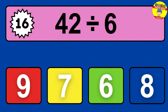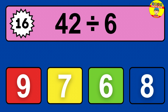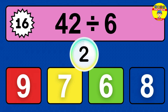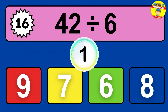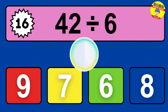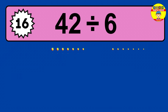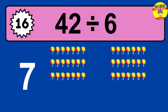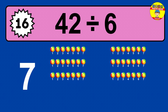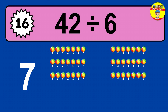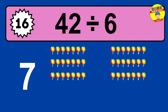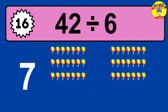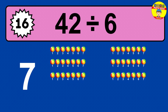42 divided by 6 — time to think. Let's go to the solution. Divide the number 42 by 6. Each group contains 6 units, so dividing 42 by 6 results in 7 equal groups. Thus, the result is 42 divided by 6 equals 7.